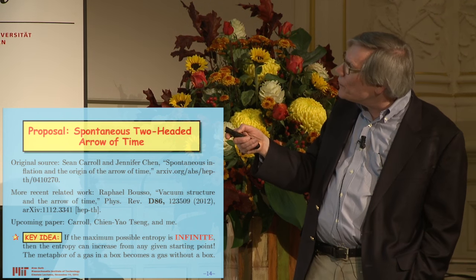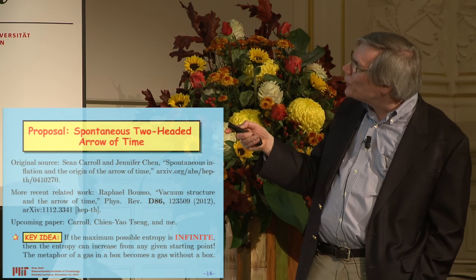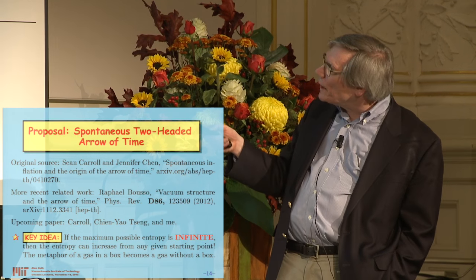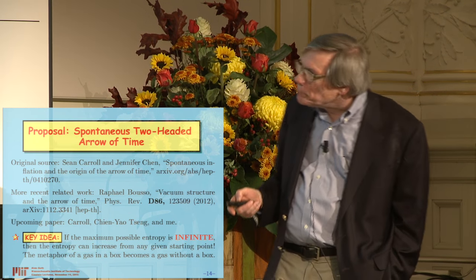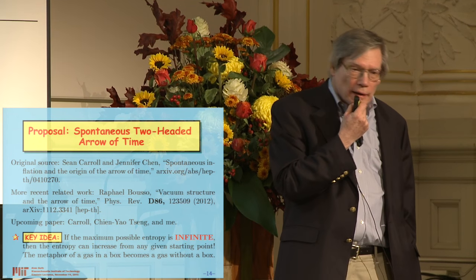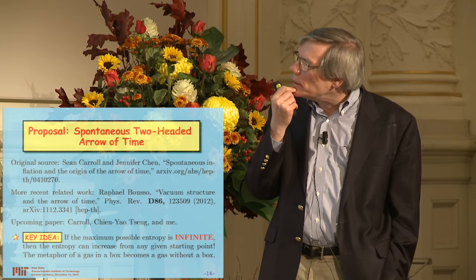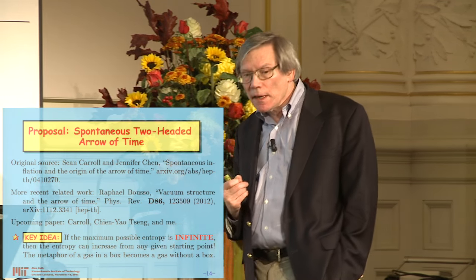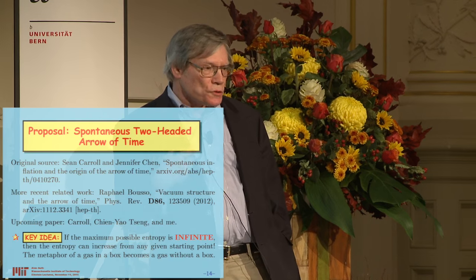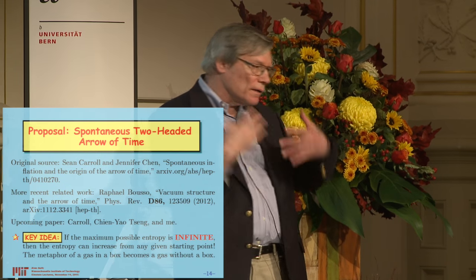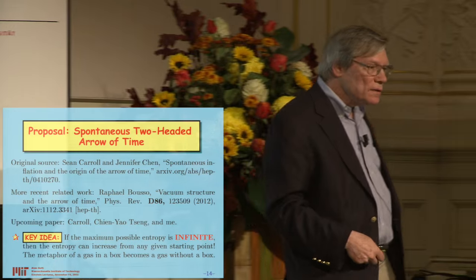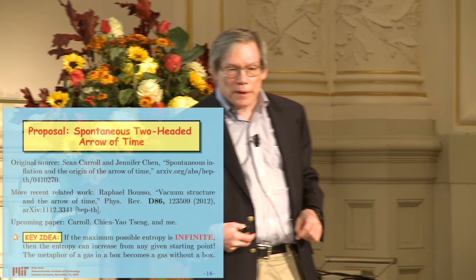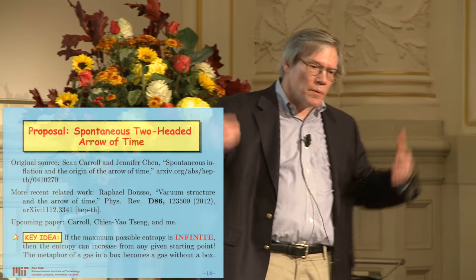I am currently working — although I'll admit I've been currently working on this for a long time and haven't made much progress actually writing something — but we think we know exactly what we want to write, with Sean Carroll, Xianyao Tseng, and me. The key idea is really very simple: if we make the assumption that the maximum possible entropy for the universe is infinite — and that's a plausible assumption, although we don't really know for sure — then in most of our theories the maximum possible entropy is infinite.